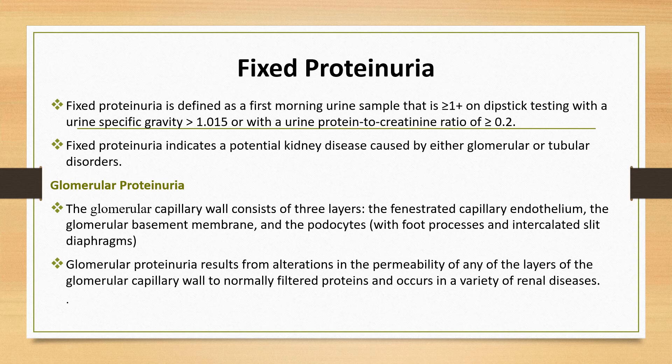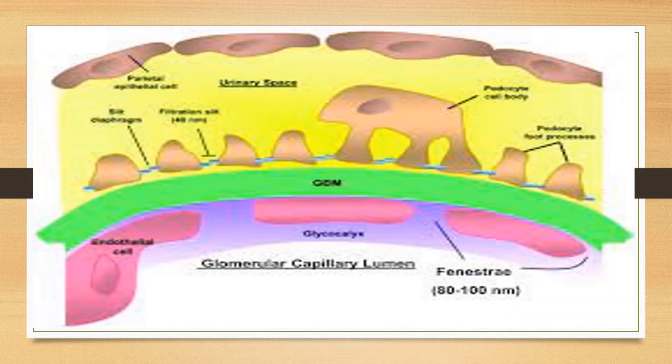Regarding glomerular causes of proteinuria, the glomerular capillary wall consists of three layers: the fenestrated capillary endothelium, the glomerular basement membrane, and the podocyte with its foot processes and intercalated slit diaphragm. Glomerular proteinuria results from alterations in the permeability of any layer of the glomerular capillary wall and occurs in a variety of renal diseases. It can range widely from less than 1 gram to greater than 30 grams of protein per 24-hour period. The podocyte is the predominant cell of injury in most glomerular diseases characterized by heavy proteinuria.